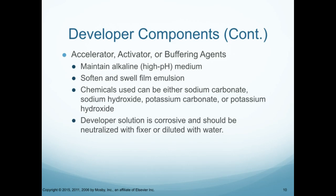Components of the developer include an accelerator, an activator, and a buffering agent. This maintains the alkaline or high pH medium that it is in, and it softens and swells the film emulsions. The chemicals used can be either sodium carbonate, sodium hydroxide, potassium carbonate, or potassium hydroxide. The developer solution is corrosive and should be neutralized with fixer or diluted with water — usually both.